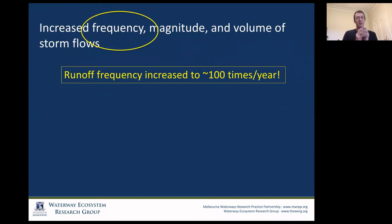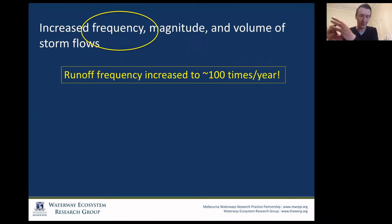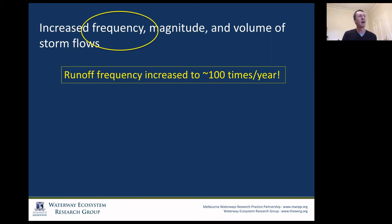That increased frequency of peak flows: in a typical natural state, any surface runoff might only happen a few times a year — one, two, three, four, five times — depending on the climate, soil, and slope, meaning the ecosystem has time to recover. In the case of Melbourne, where it rains about 120 times a year, we get those discharge peaks going into the stream something like 100 times a year. It's very unlikely that an ecosystem has time to recover when, on average, it's happening every three or four days.